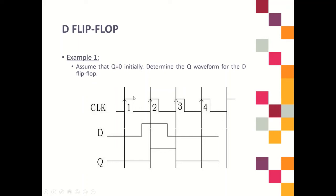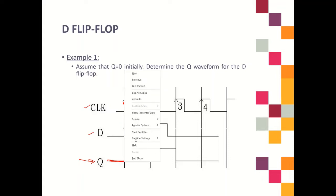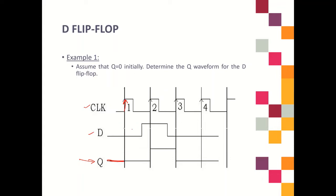Now let's look at an example of the Q waveform. You are given the clock and D, and you need to draw Q. Assume Q is equal to 0 initially. Carry Q equal to 0 until you meet the first clock transition from 0 to 1. At that point, refer to D — D here is 0, so Q is also equal to 0.